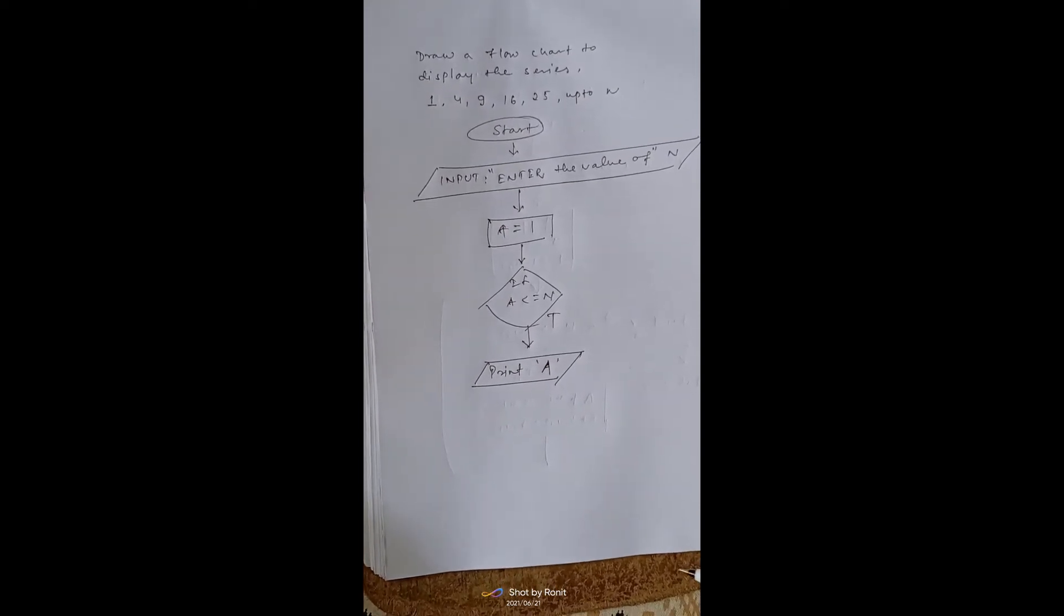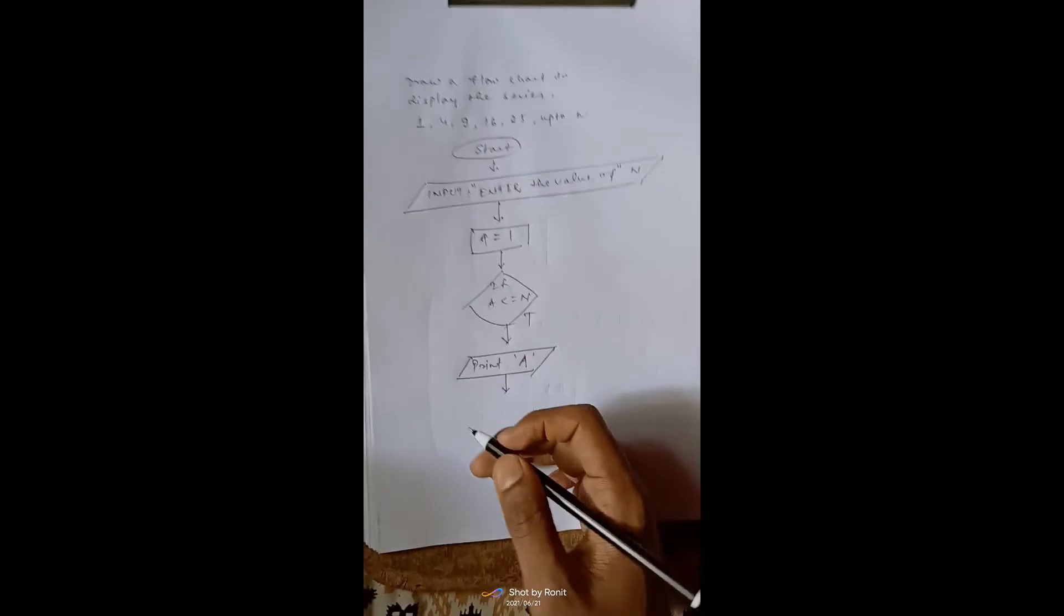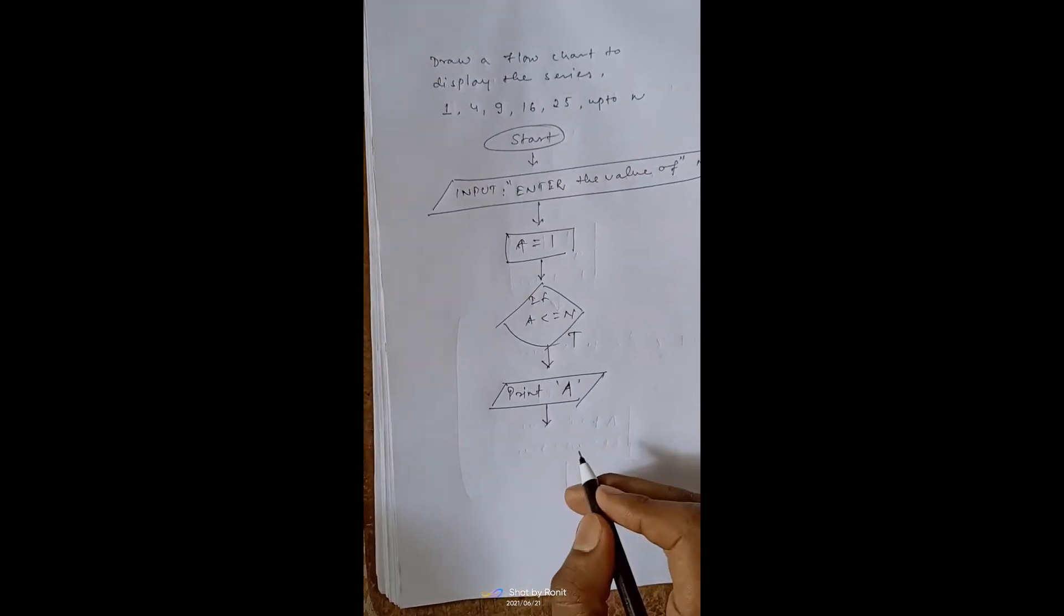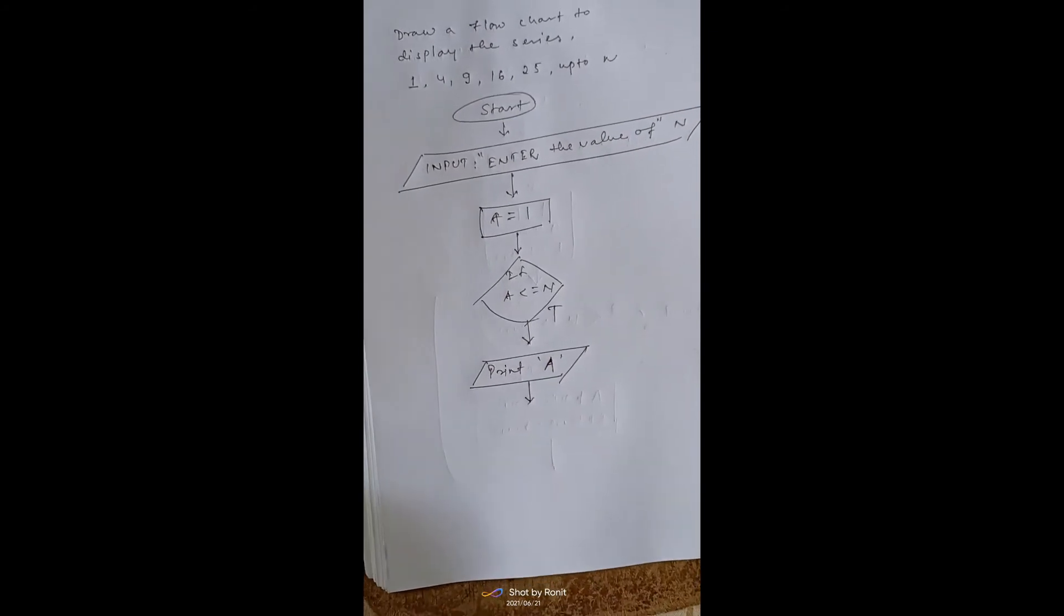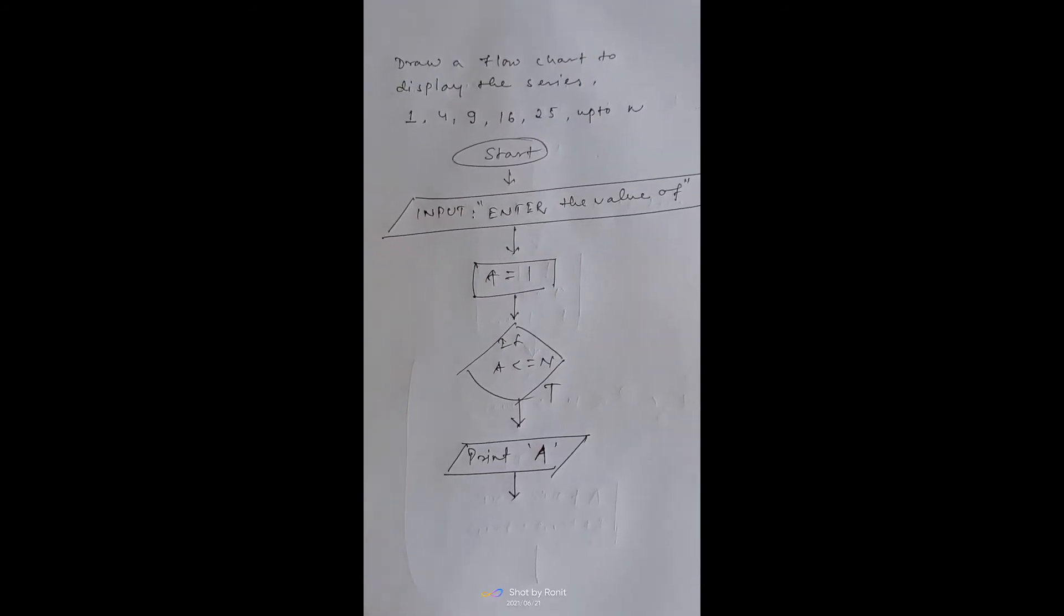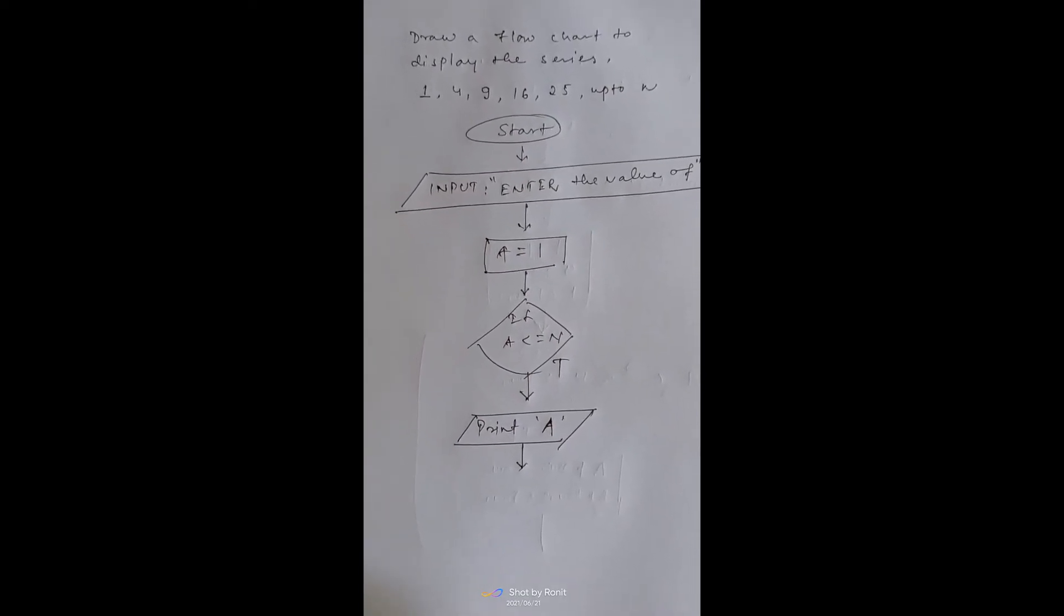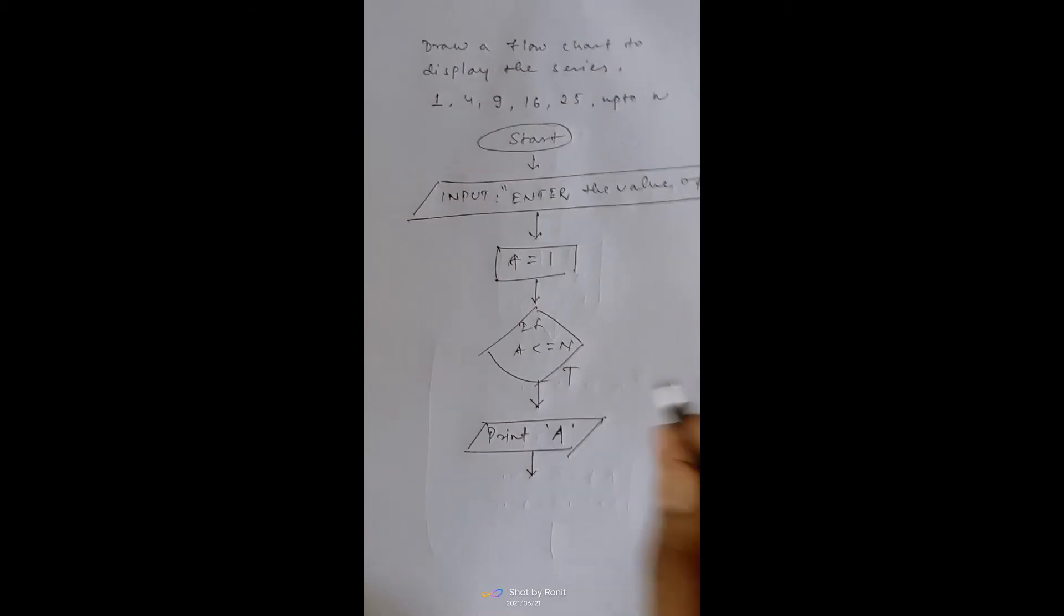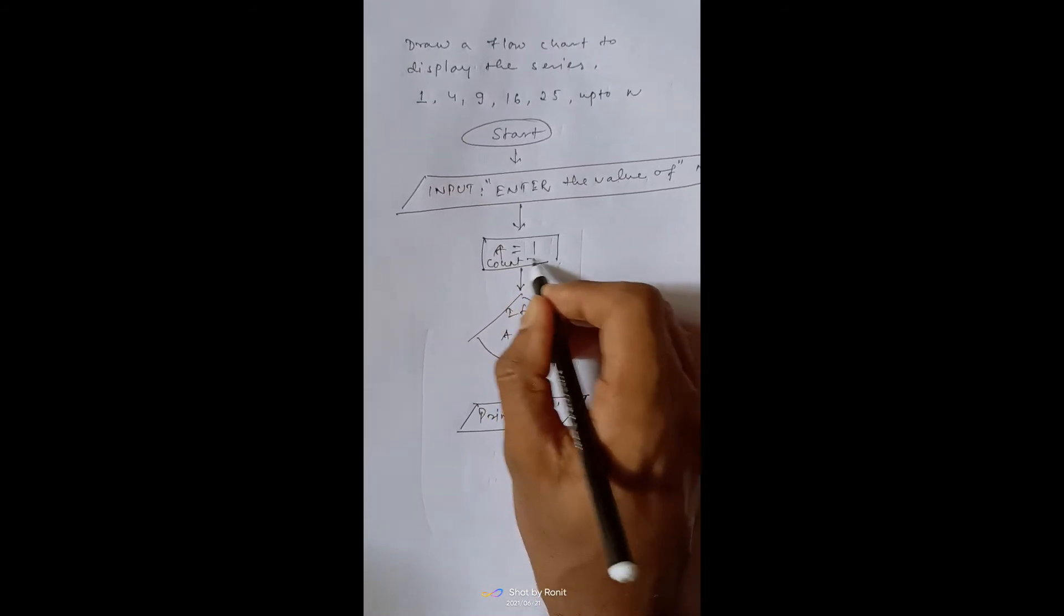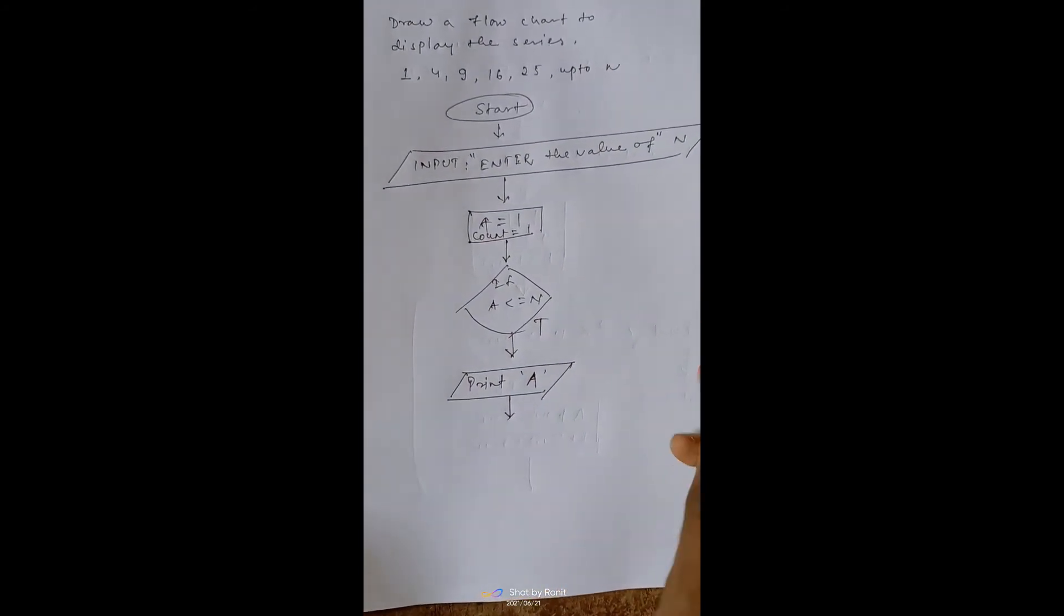After that, we will move forward to the next term. So what is our next term? Our next term is square of its term. For that, we have to know what number of term it is. So for that, we will consider a variable, say count. Count is 1.